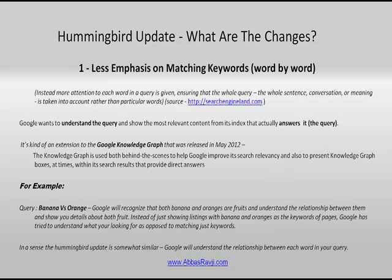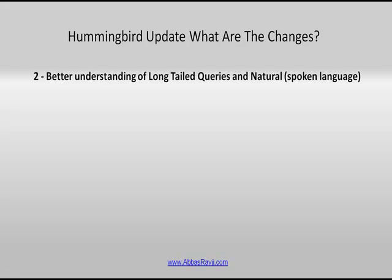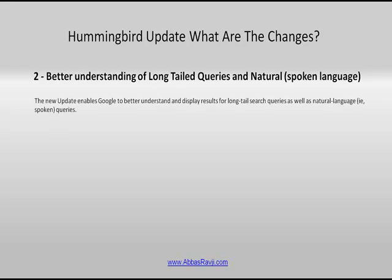In a sense the Hummingbird update is similar — Google will understand the relationship between each word in your query. There's less emphasis on matching keywords now, and instead they're trying to focus on understanding the whole query. Point number two on what's changed is Google has a better understanding of long-tail queries and natural spoken language. The new update enables Google to better understand and display results from long-tail search queries as well as natural spoken queries.